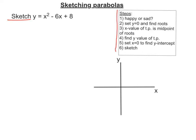The first thing is happy or sad. Well, it's a happy curve if the coefficient of x squared is positive. In this case, the coefficient is 1. So if it's happy, that means the curve is of that shape there.